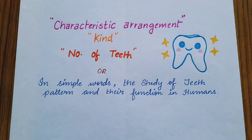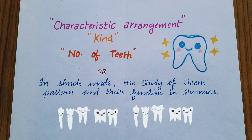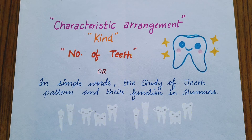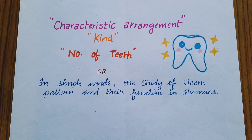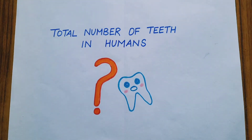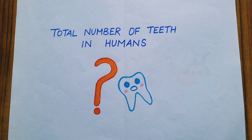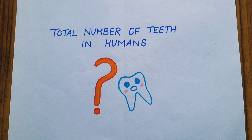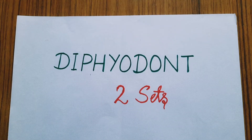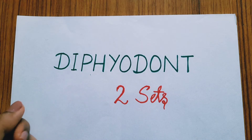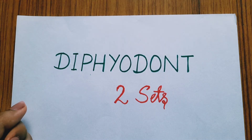In a particular species, how the teeth are arranged, what are the characteristic features of those teeth like the shape, size, and how many teeth are present in total is what the dentition tells us. If I ask what is the total number of teeth in humans, you'll instantly tell me it's 32, but is that the case with everyone?